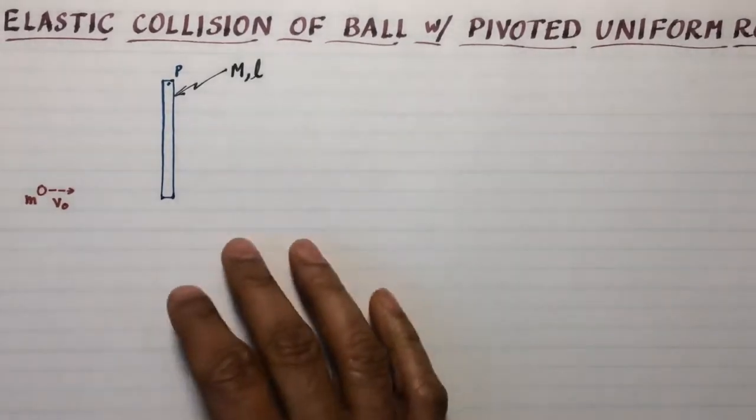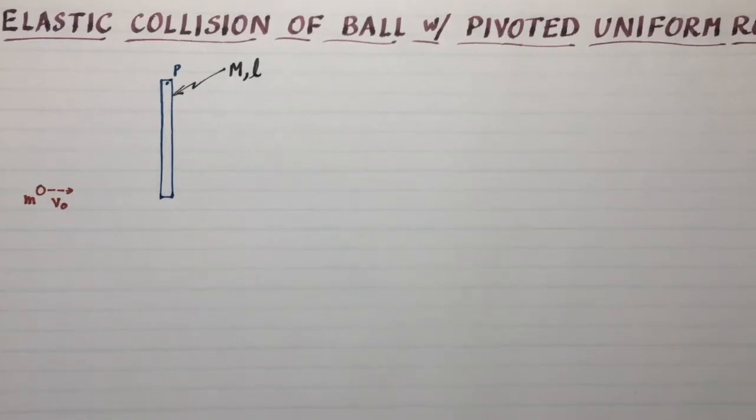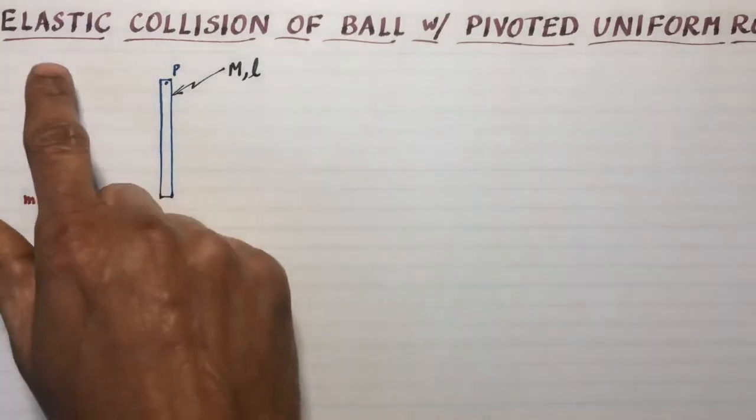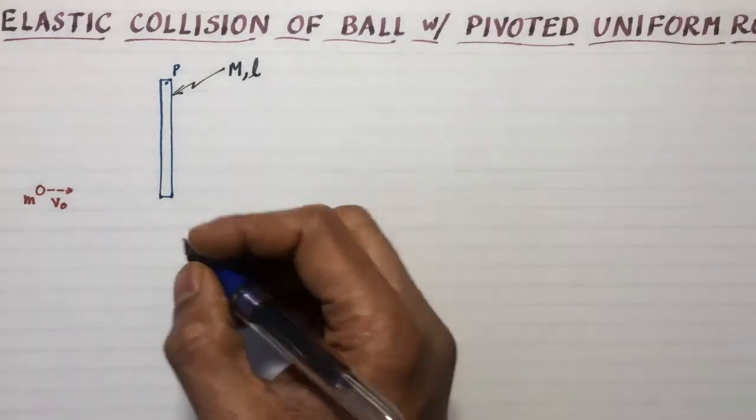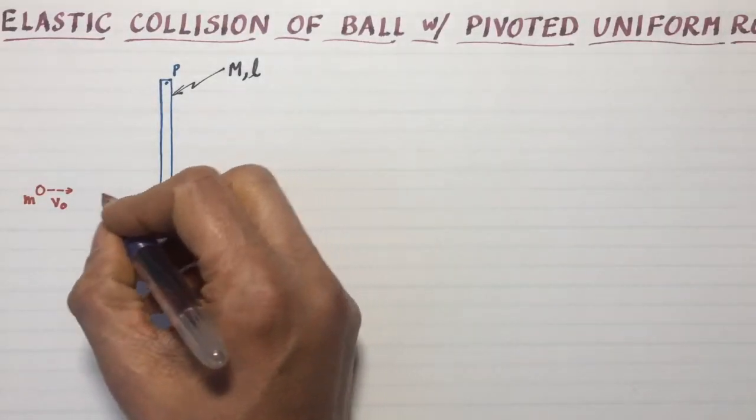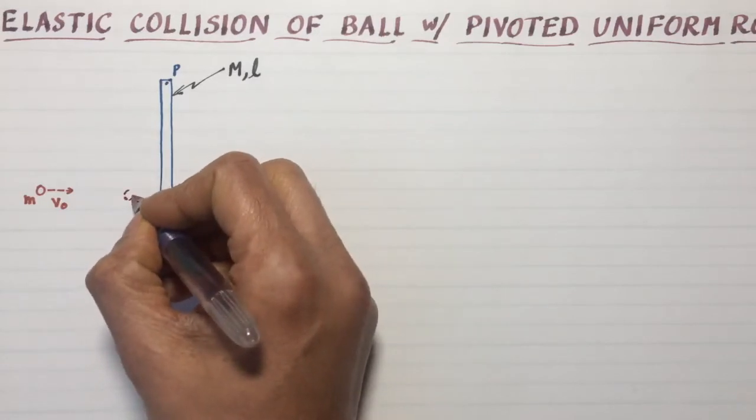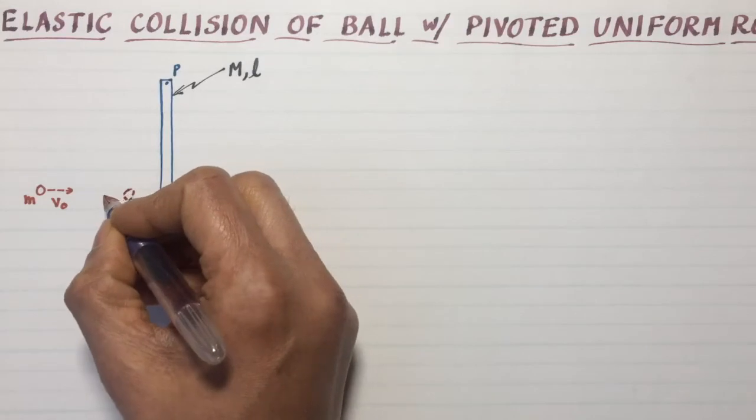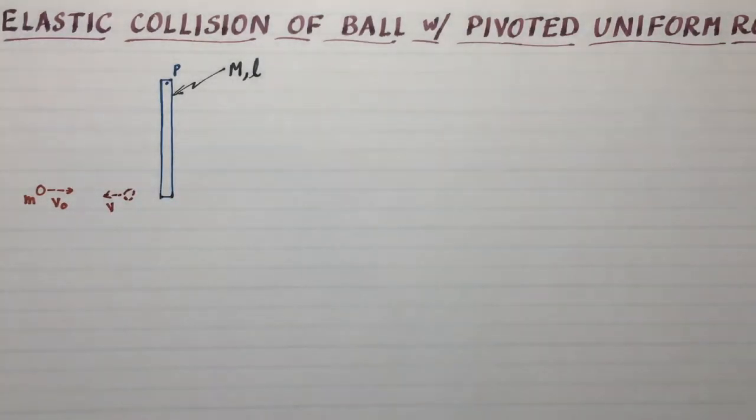An elastic collision is a collision that conserves energy. Unless I've told you, you should never assume that energy is conserved. But in this case, I am telling you upfront that energy is conserved. That will allow you to find what happens after the ball hits the stick. If it's heavy, it could go in the same direction. If it's light, it could rebound.